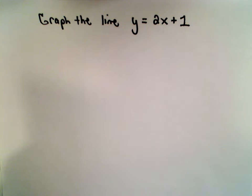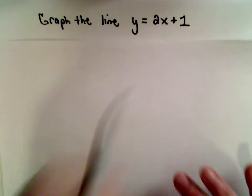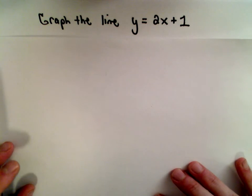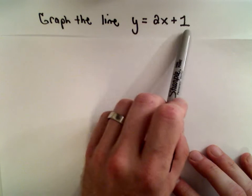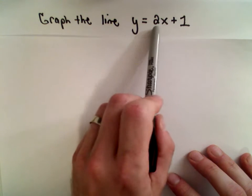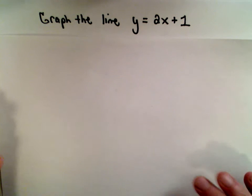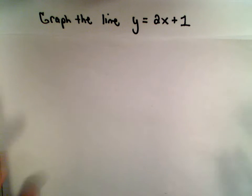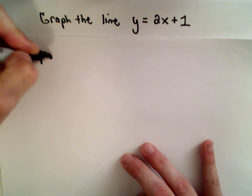In this example we're going to graph the line y equals 2x plus 1. There are a couple different ways you could do this. We've talked about slope-intercept form before — you could recognize this line has a y-intercept of positive 1 and a slope of 2 and graph it that way. But I'm going to do it slightly differently by just plotting two points.